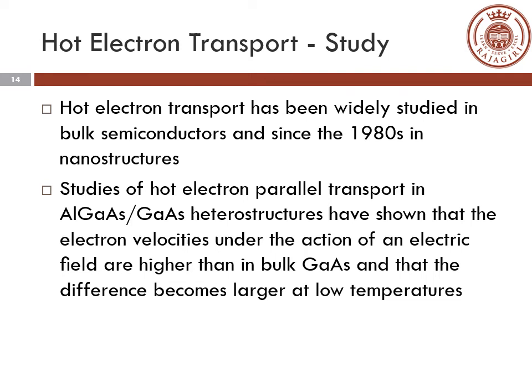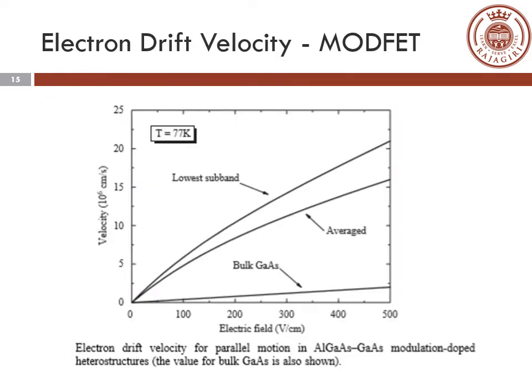This hot electron transport has been widely studied in bulk semiconductors and in nanostructures from the 1980s. Studies of hot electron parallel transport in aluminum gallium arsenide/gallium arsenide heterostructures have shown that electron velocities under the action of an electric field are higher than in bulk gallium arsenide, and the difference becomes larger at low temperatures. This is the plot of electron drift velocity against electric field for bulk gallium arsenide and the aluminum gallium arsenide/gallium arsenide modulation-doped heterostructure. The increase in velocity has been attributed to the quantization of electron energies in quantum wells.